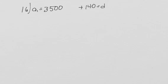This is arithmetic because we're adding $140 every month. And then what are we given? We are given A₁ and d.